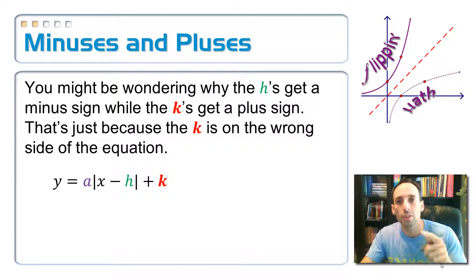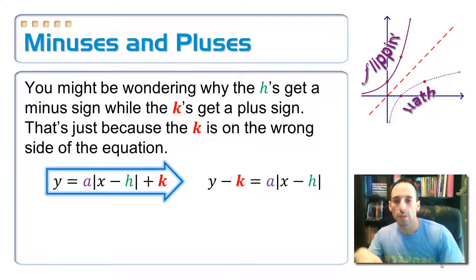But the k was in the same direction. If it was plus 3, it means up 3, and so on. Well, the whole thing is because the k is on the wrong side of the equation. If I put it over there where it belongs with the y, then they're both exactly the opposite number.